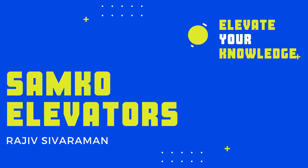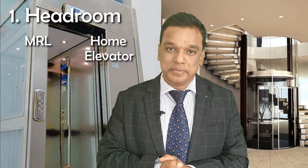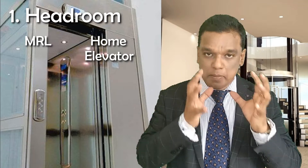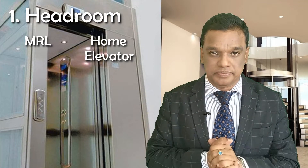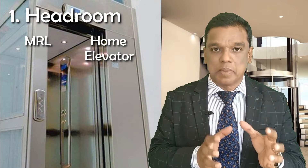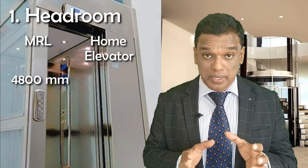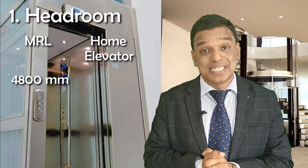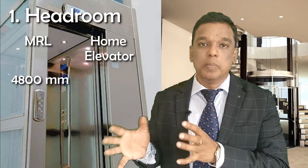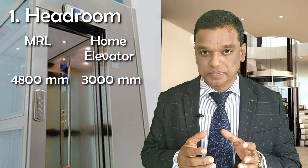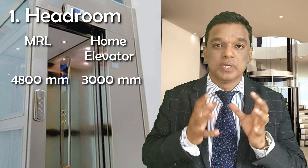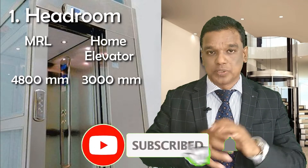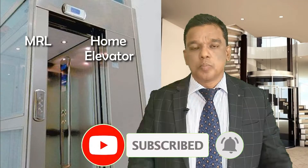Point number one is headroom. In MRL — machine room less elevator — we require a headroom of 4.8 meters, or 4800 mm, which is 16 feet. At the same time, in a home elevator we require a headroom of 3 meters, or 3000 mm. That is the difference in headroom.